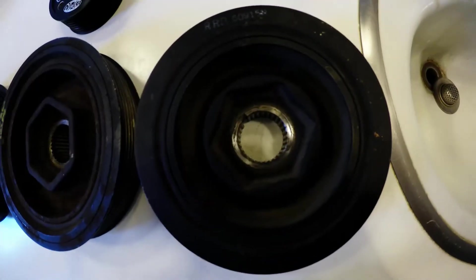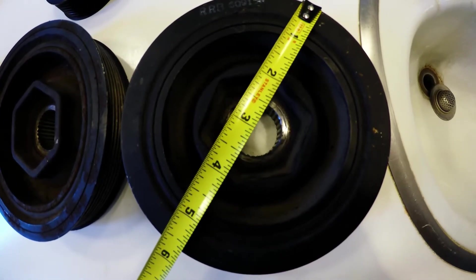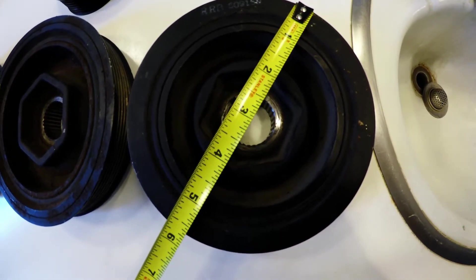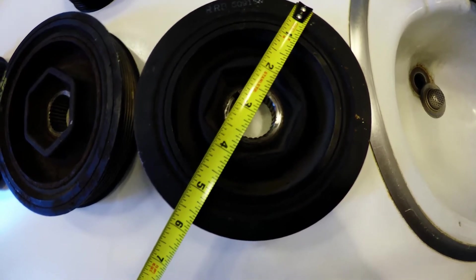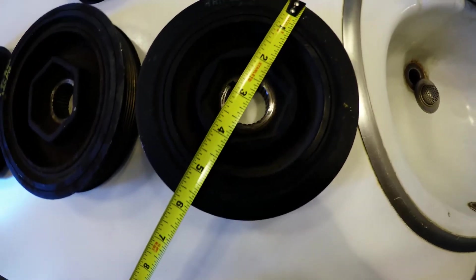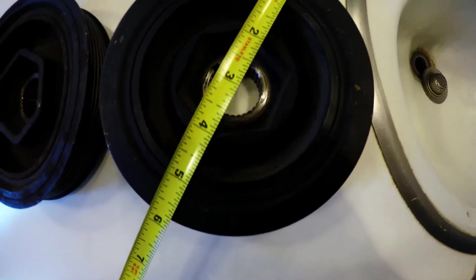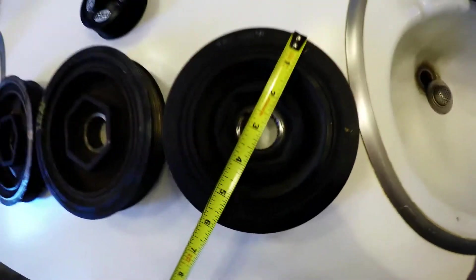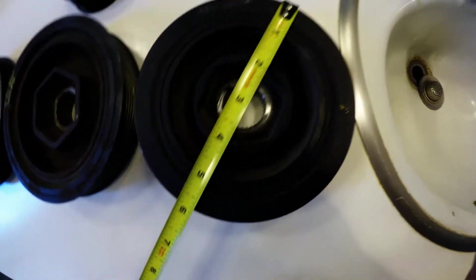Alright, so first of all we have this crank pulley. This crank pulley came off of a K20 Z3, okay, so that's off of a 2006 to 2011 Civic Si. So this crank pulley is measuring at 5.75 inches. But like I said, I'm just measuring the outside diameter, I'm not measuring the inside diameter, so y'all forgive me for that.